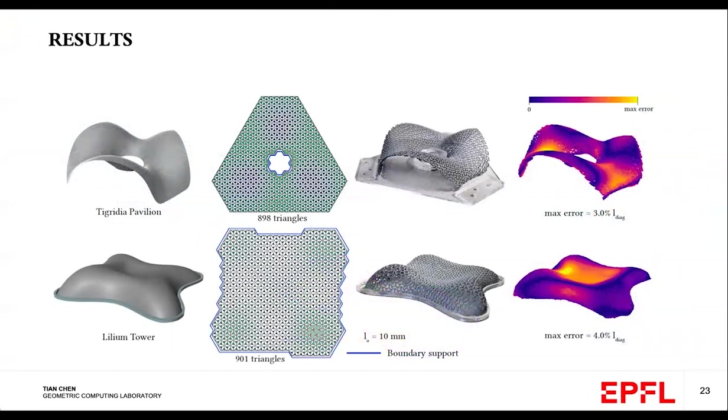And lastly, we're able to approximate much larger structures using almost 1000 triangles for each one of these models to achieve a very close approximation with our target shape.